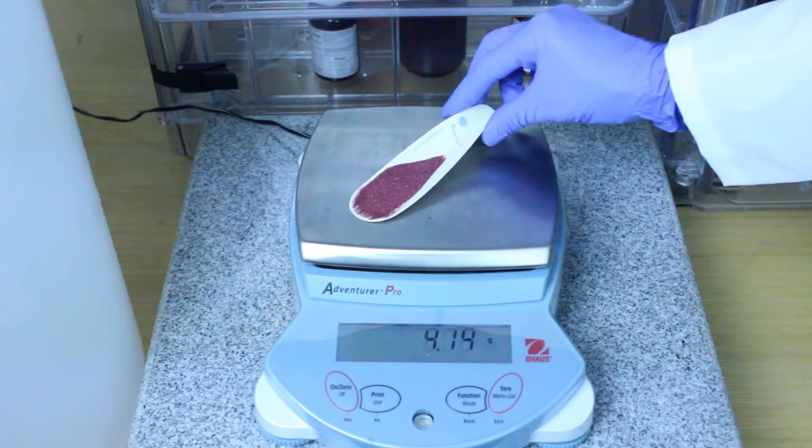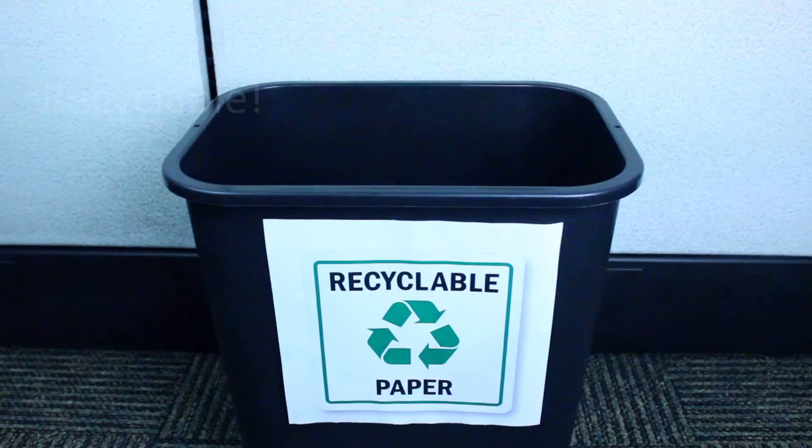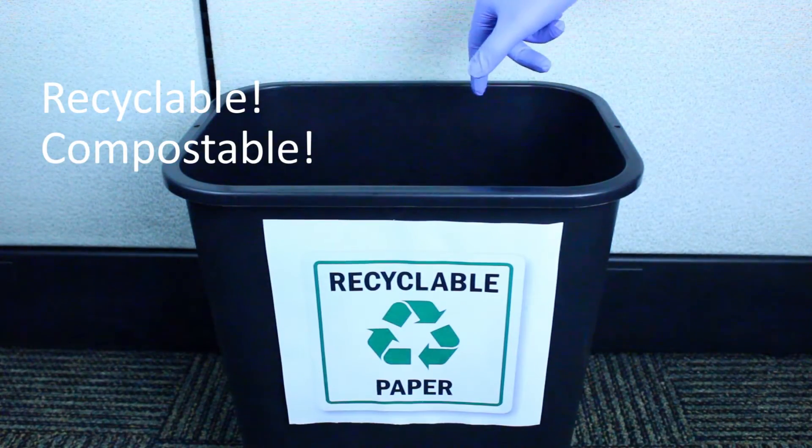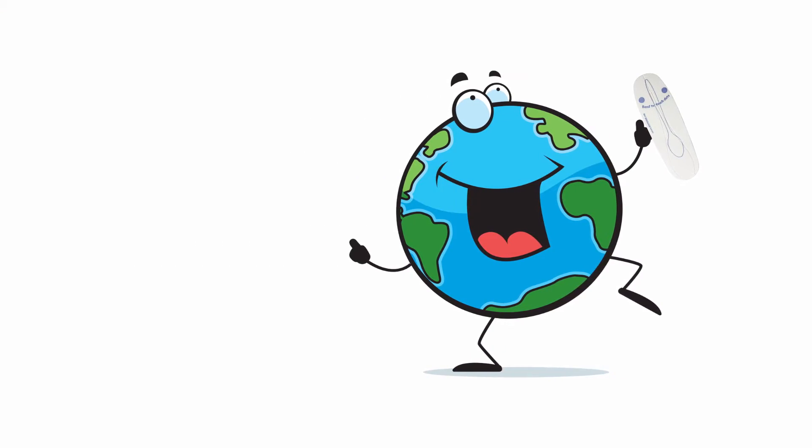They can also be used as weigh boats, recyclable or compostable. EcoTensil spoons are not only more convenient but they are also better for the environment.